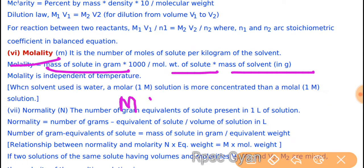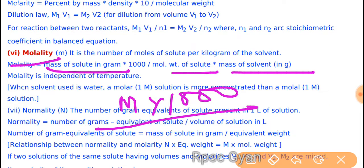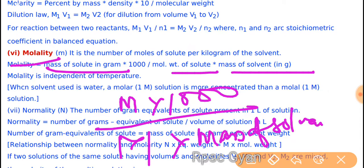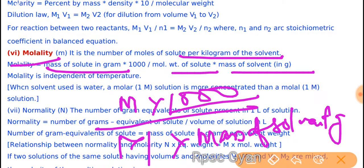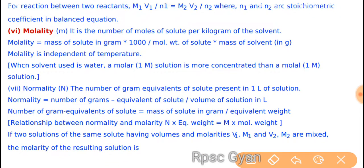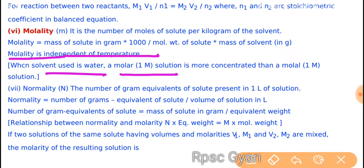Molality: number of moles of solute × 1000 upon molecular weight of solute, into mass of solvent in grams, because it is per kg. It depends on temperature but the molality is independent of temperature. When solvent water is used, one molar solution is more concentrated than one molal solution.